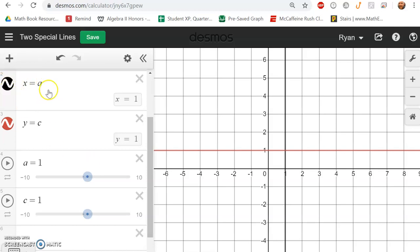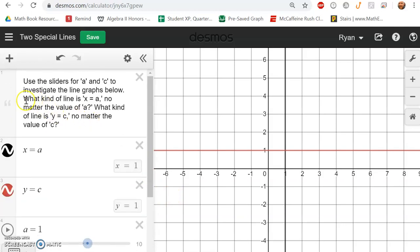Now the line that goes with the equation x equals a is in black, and the line that goes with the equation y equals c is in red. Hit pause, find that link on Google Classroom, and when you think you've got it sorted out the answer to these questions right here, hit play and we'll talk about it.